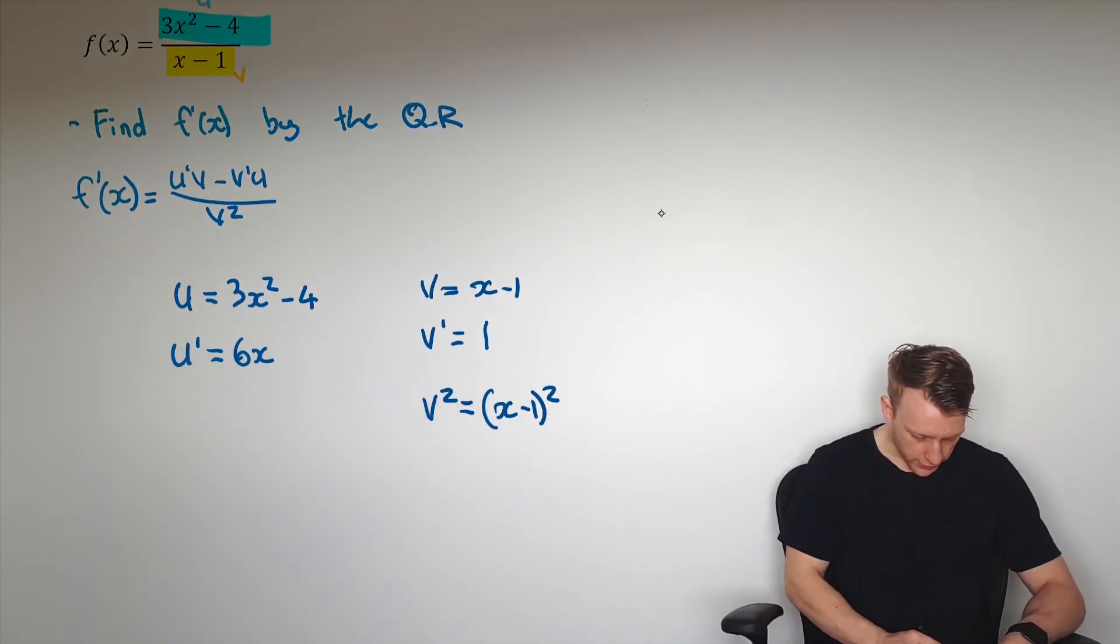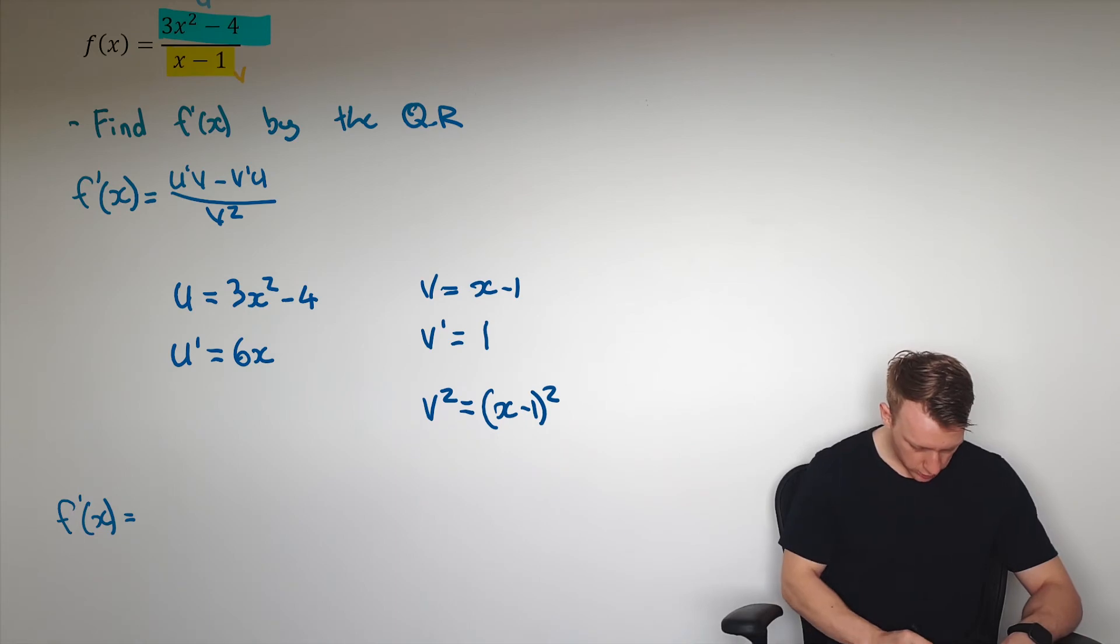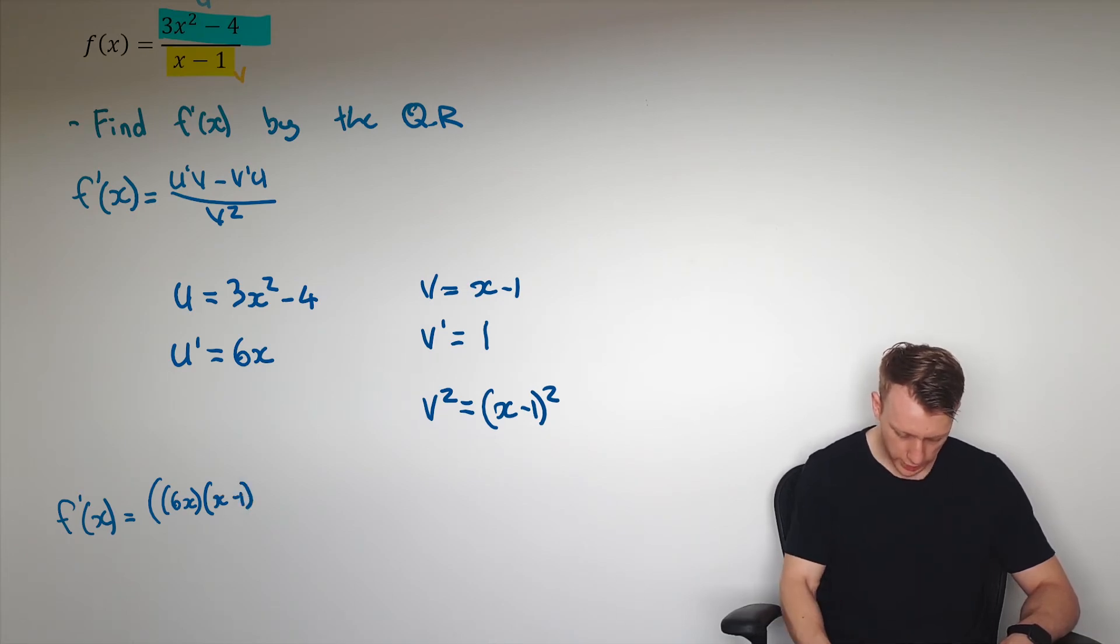So we plug all this stuff in here. We've got f'(x) being equal to u', which is 6x, multiplied by v, which is x - 1. I might color code some stuff here. I've got that there, that there, which is exactly what I've put in here, here, and here. And then I'm going to have v', which is 1 there, and u, which is there. I'll color code those as I'm putting them in here. So that is the first part of it.